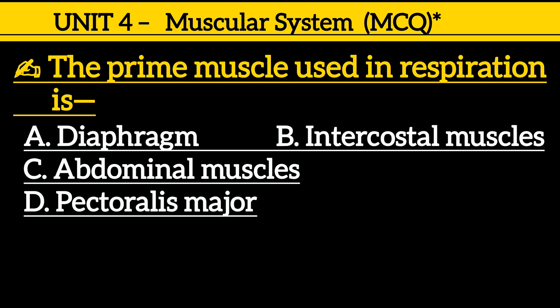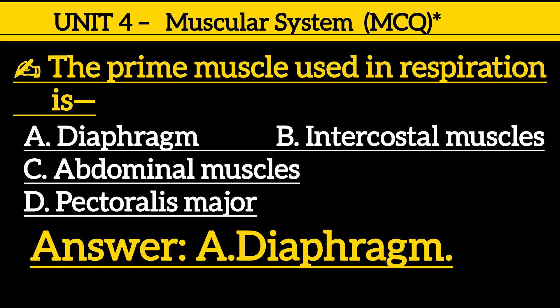Next one is: the prime muscle used in respiration is — option A: diaphragm, option B: intercostal muscles, option C: abdominal muscles, option D: pectoralis major. Correct answer is option A, diaphragm.